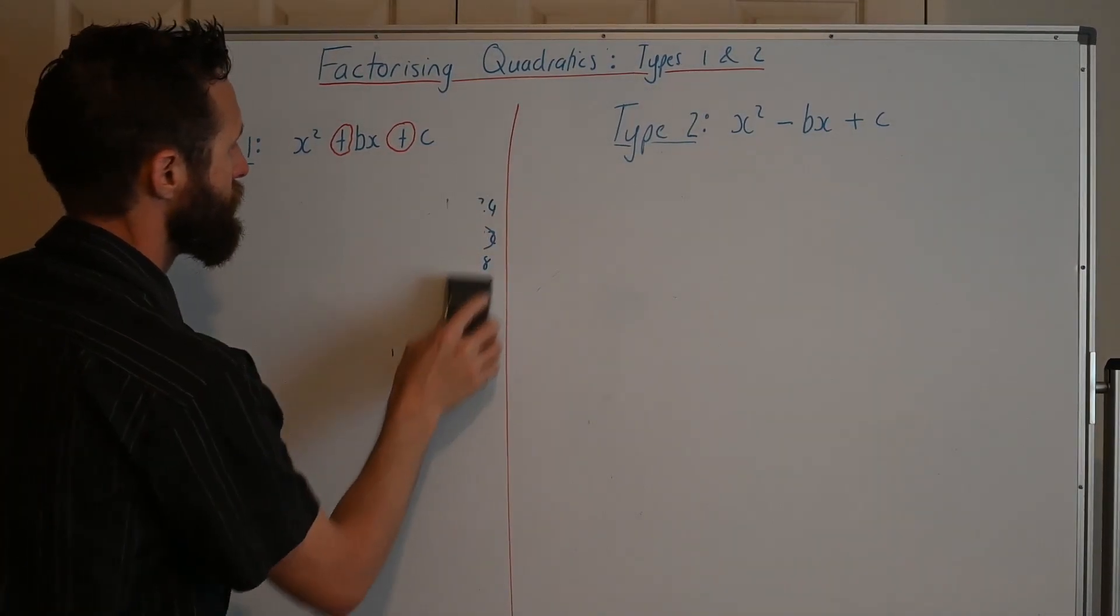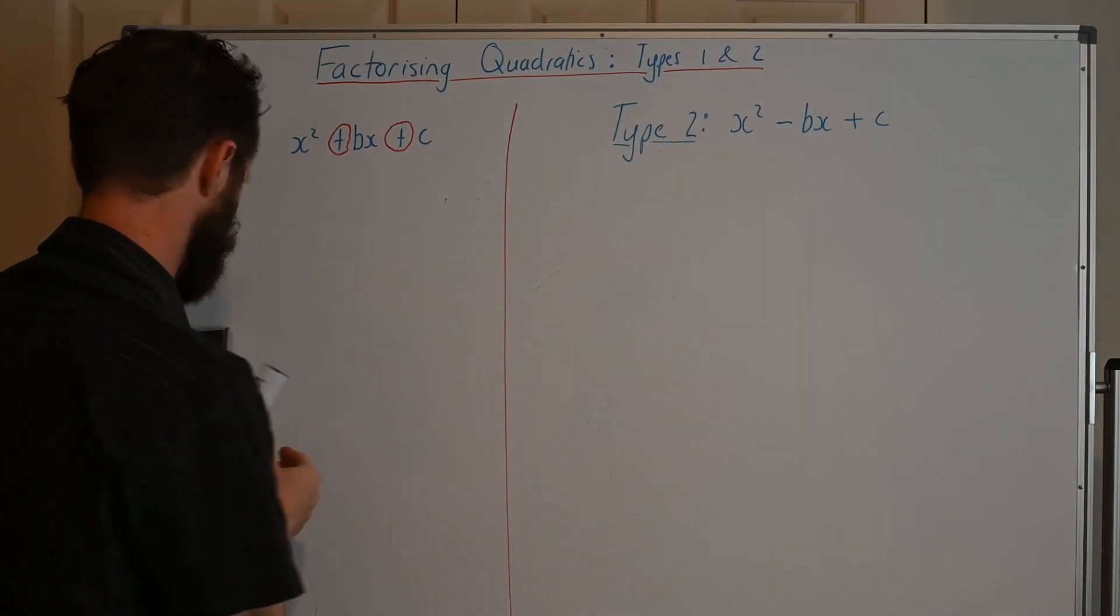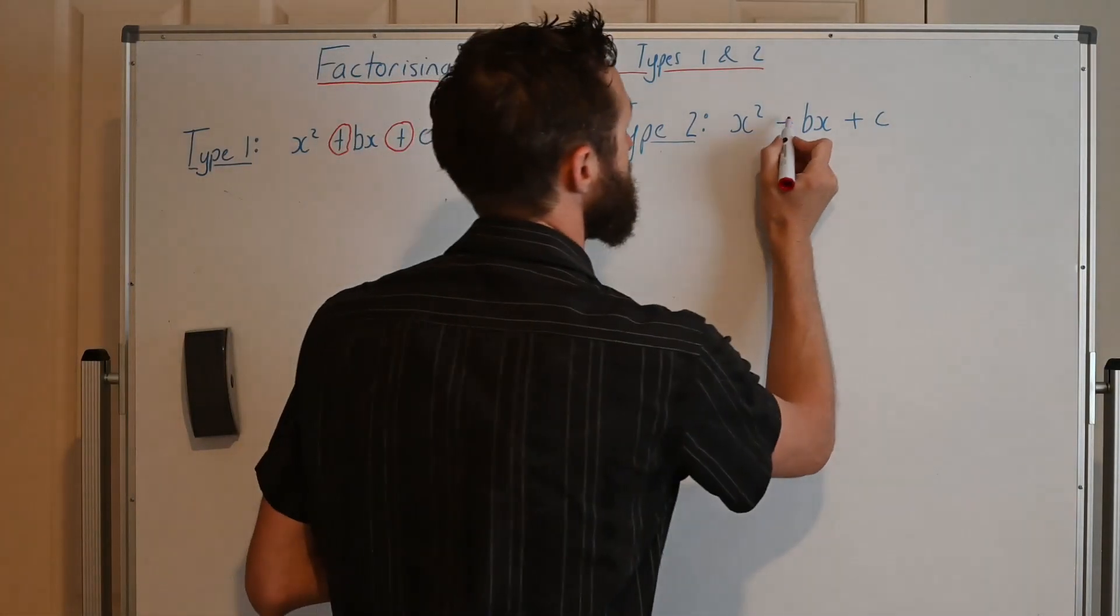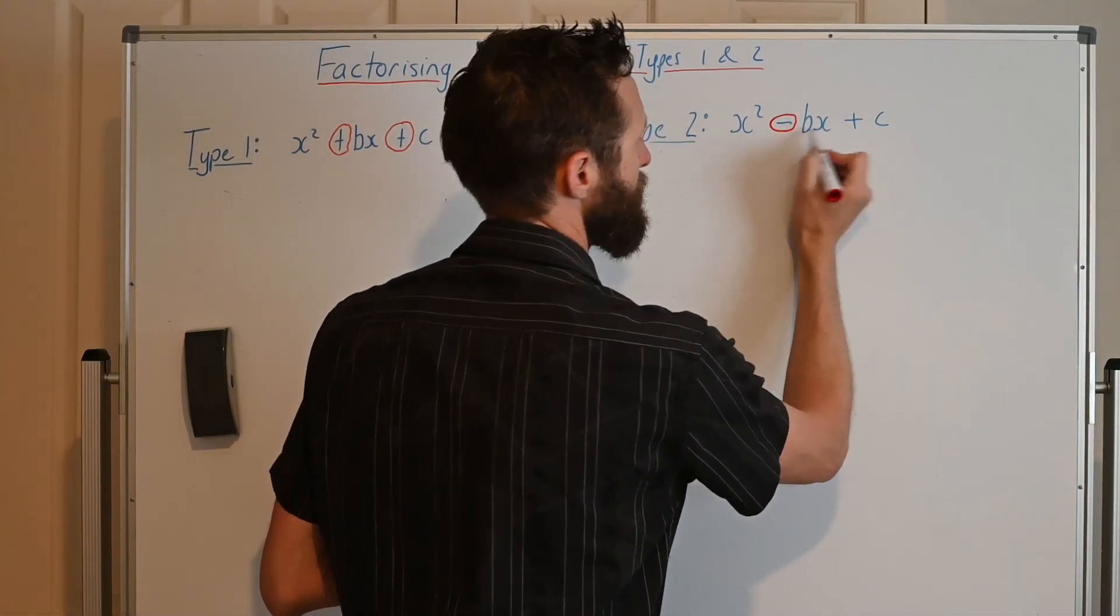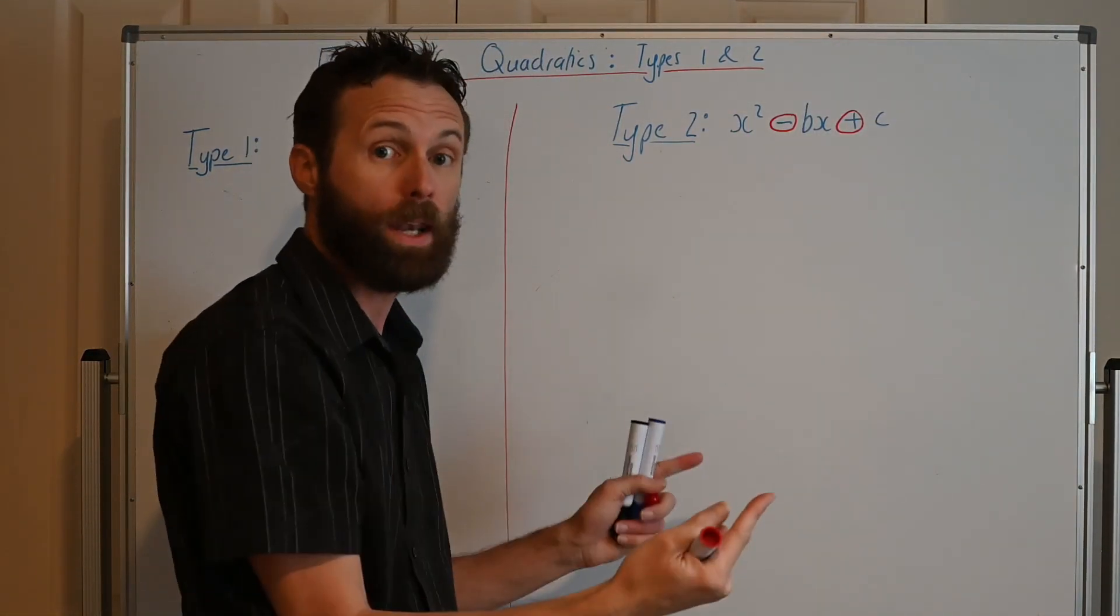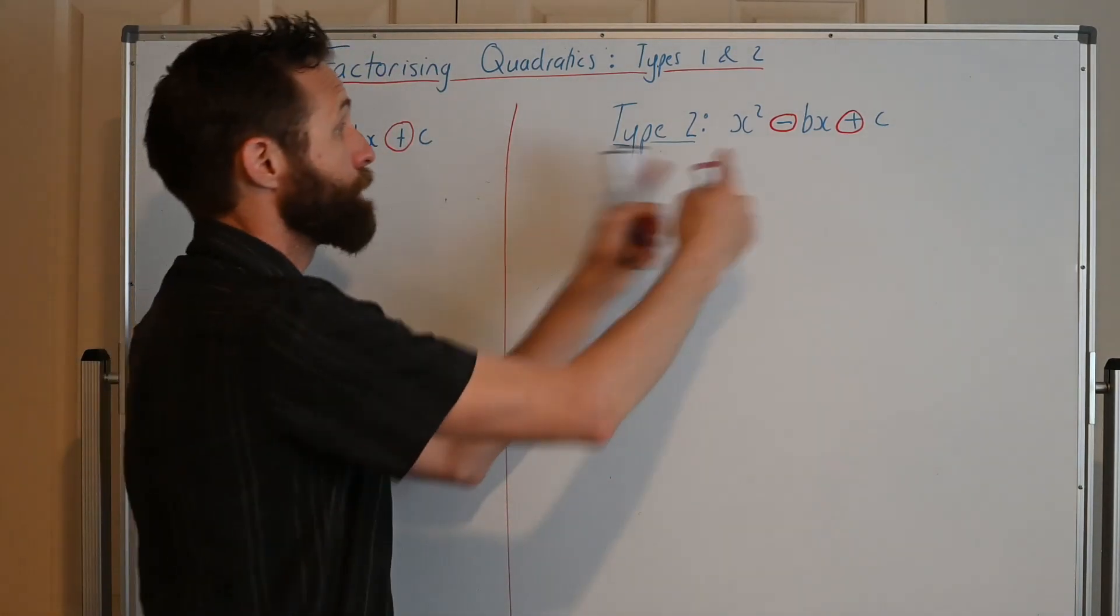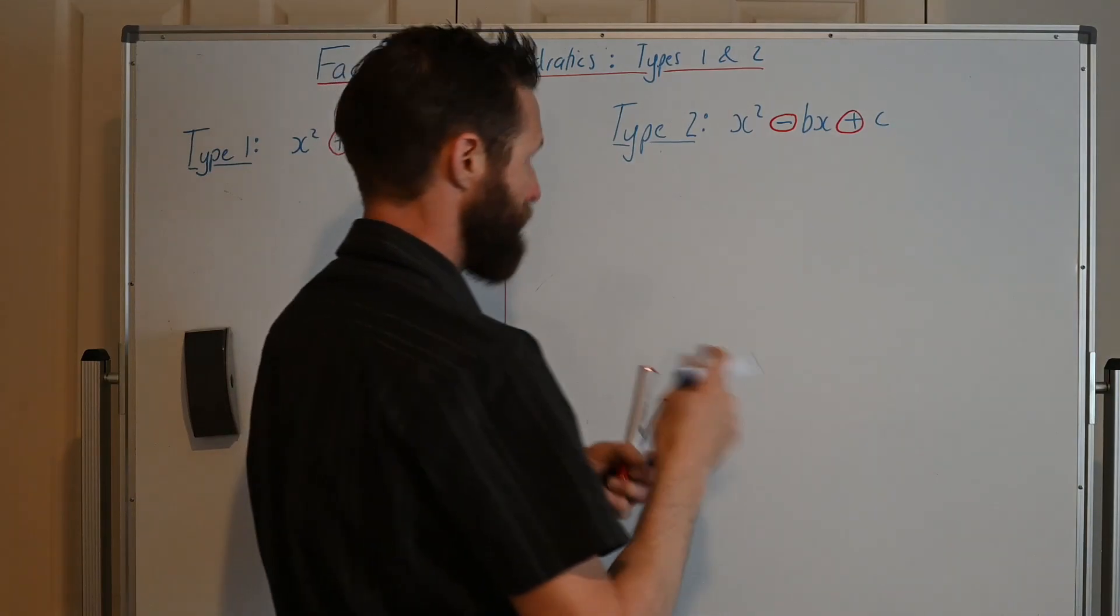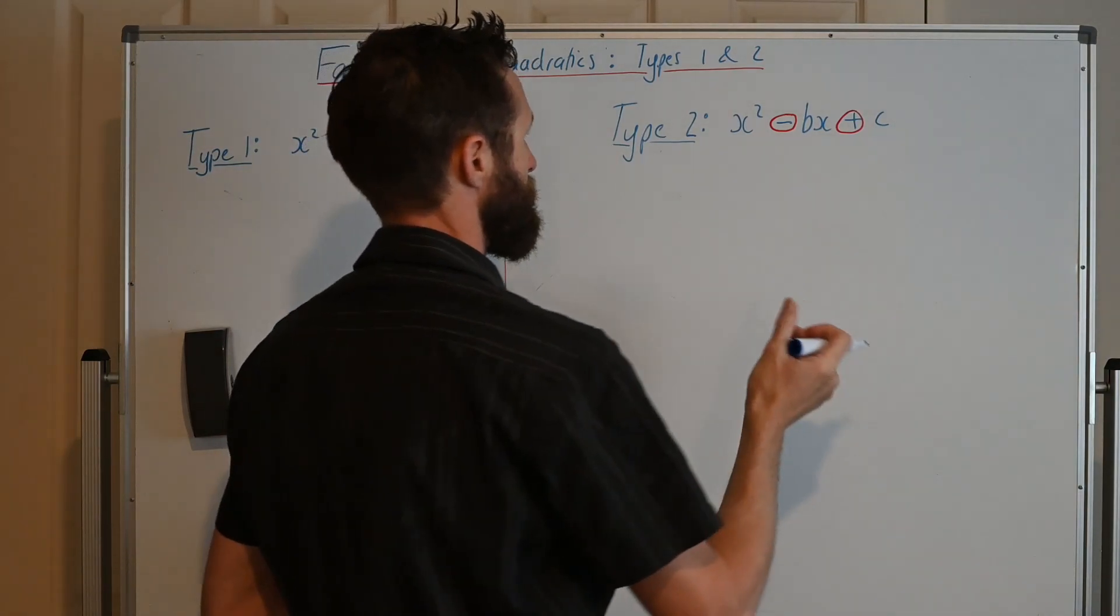Now we're moving on to type 2. Now, the important thing to notice about type 2 is that we have a minus in front of the bx and a plus in front of the c. So it goes minus plus, minus plus. Type 1, plus plus. Type 2, minus plus. So let me give you an example of how this works. Let's think about FOIL.